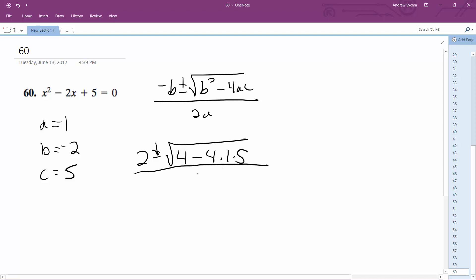all over 2a, which is 10. 4 minus 20, which is negative 16, all over 10